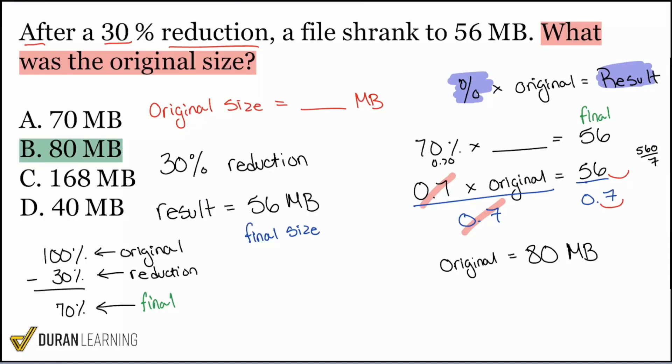If you had kept the 30 percent instead, you may have gotten 168 megabytes — that's the wrong answer. We have to remember that the formula matters so much. You have to consider consistency and represent everything the right way. If we do that, we'll be in a great position every time we step to the plate.